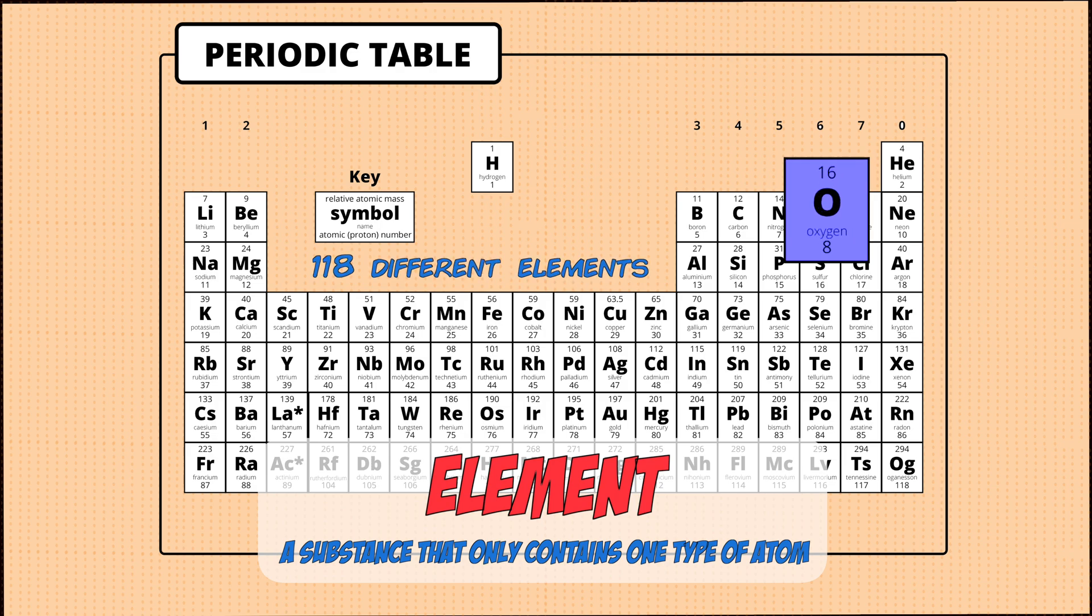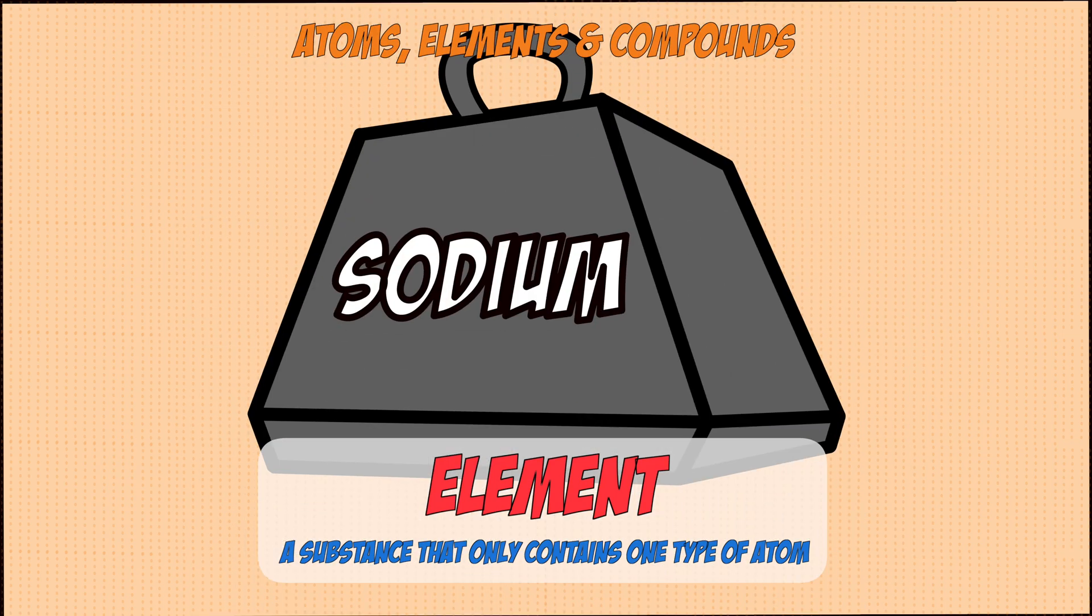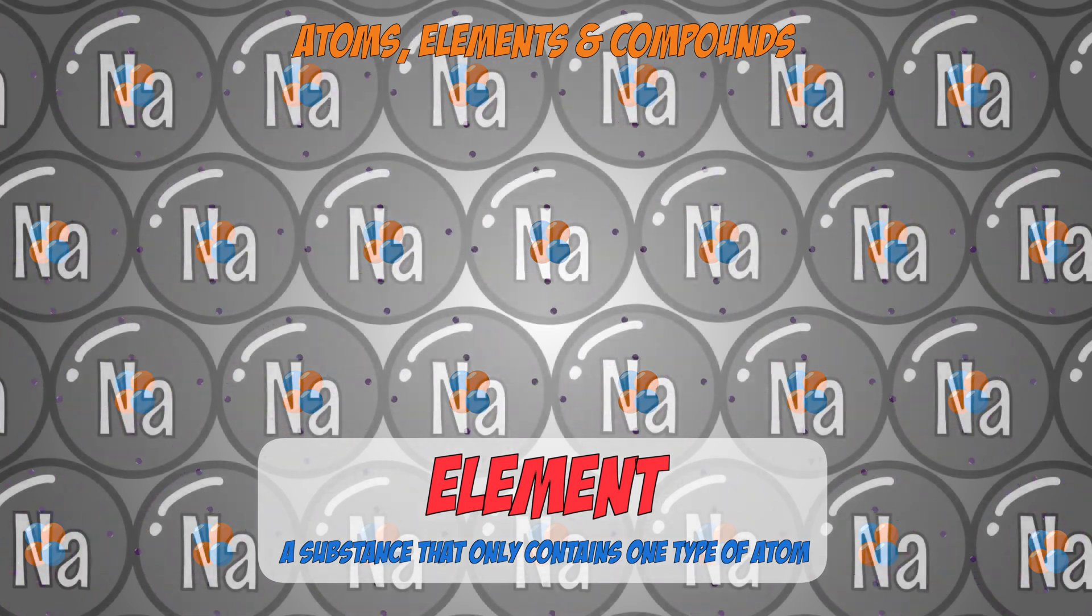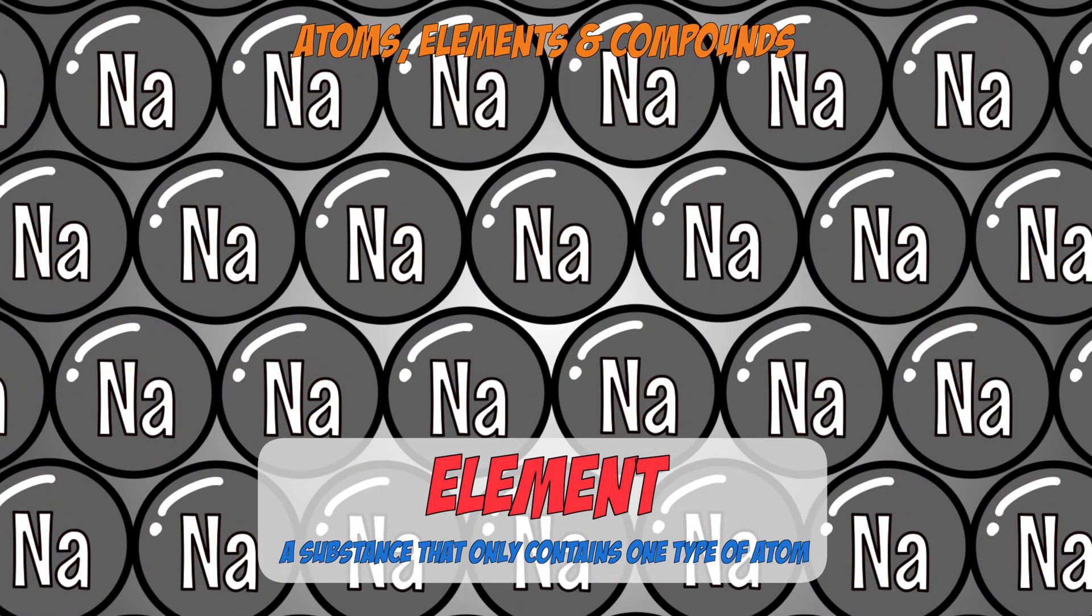For example, oxygen has a symbol of O and sodium has a symbol of Na. So if you had a block of sodium and you were to zoom into it, you would find that it's only made out of sodium atoms because it's an element.